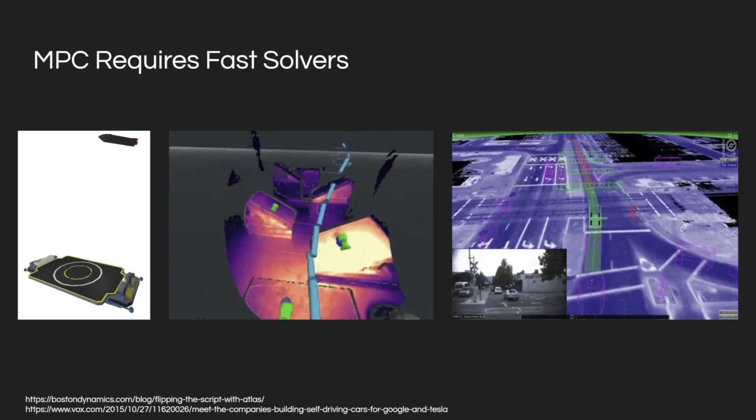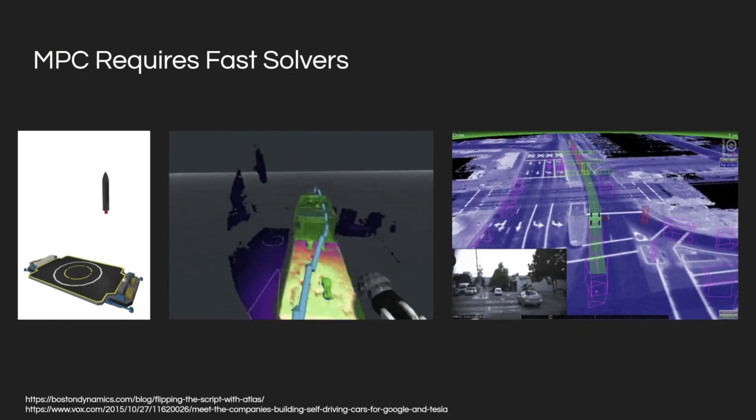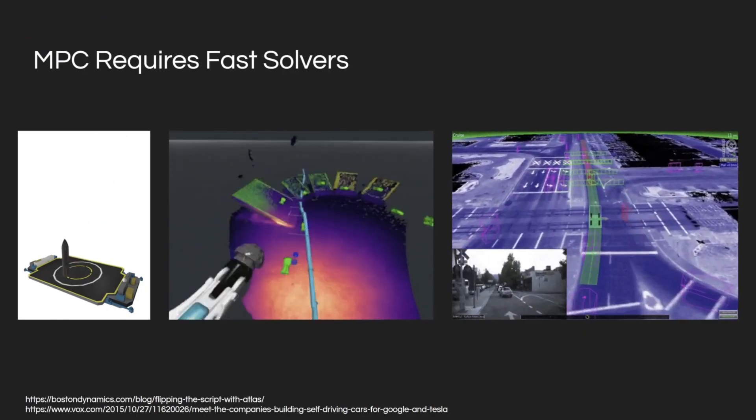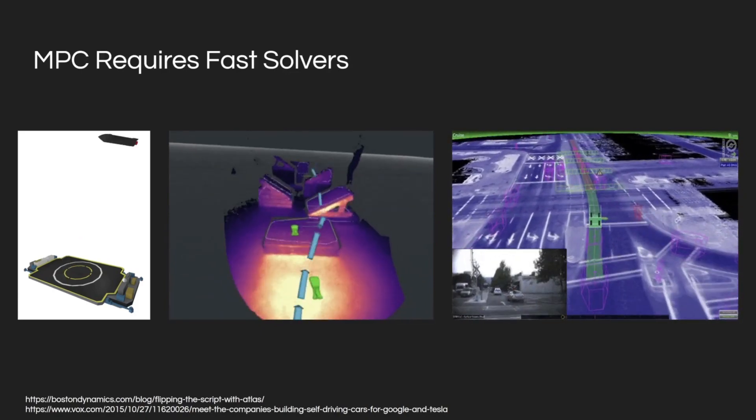MPC is a widely used control strategy that solves a receding horizon optimization problem while reasoning about system dynamics and constraints. Successful applications include rocket soft landing, legged locomotion, and autonomous driving.